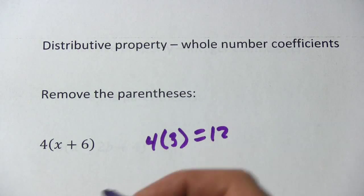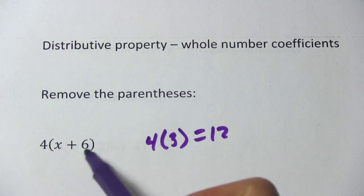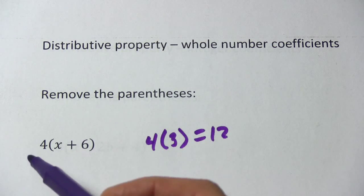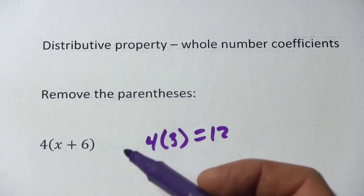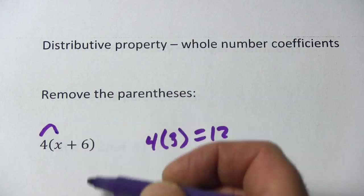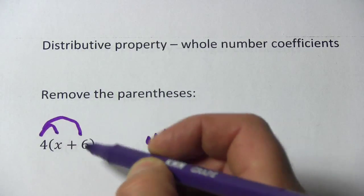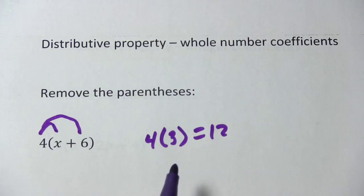Well, this means 4 times everything inside those parentheses, and the way we do this is just do each piece one at a time. So this is going to be 4 times x, and then 4 times 6, and we put them back together.